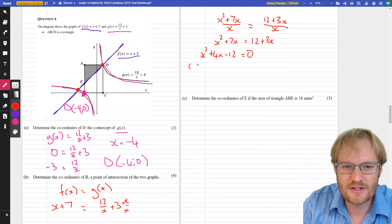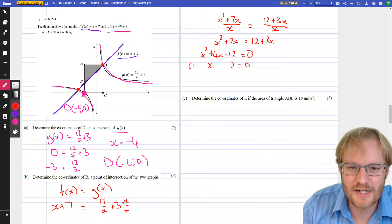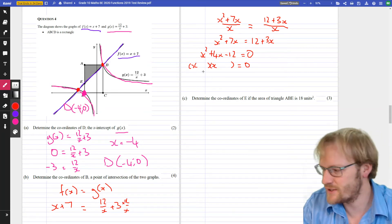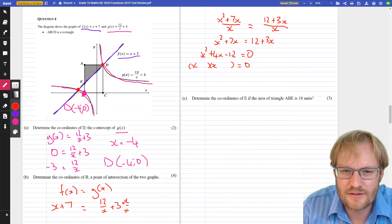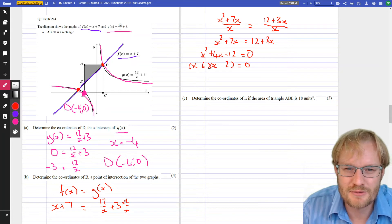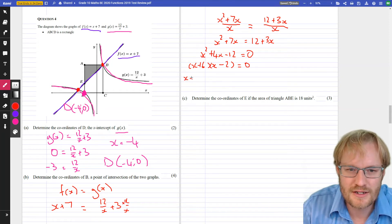Okay, factorize. We've been doing so much factorizing this year, do it in our sleep. X times X gives us X squared, and what times what gives us negative 12. I know that you know how to factorize, so this is 6 times 2, positive 6X minus 2X gives us 4X, so X equals negative 6 or X equals positive 2.